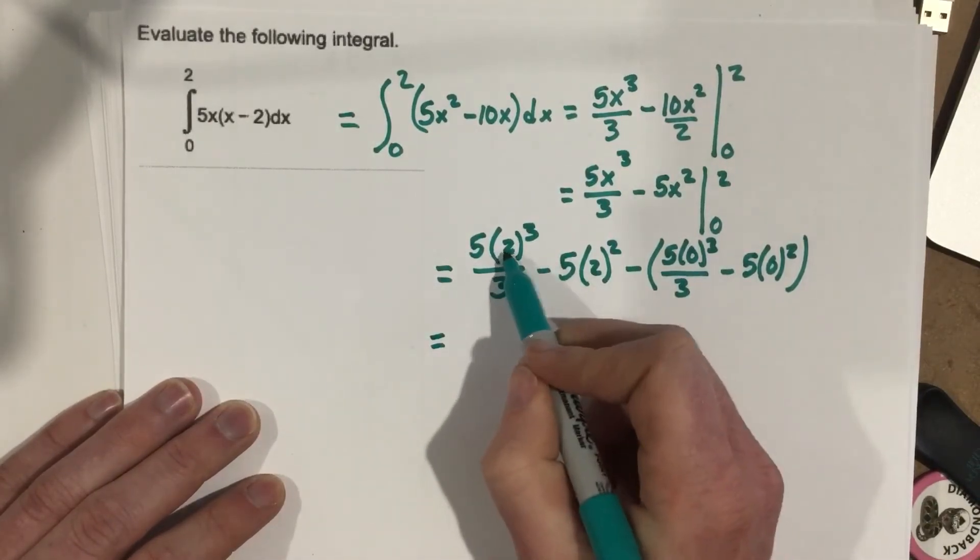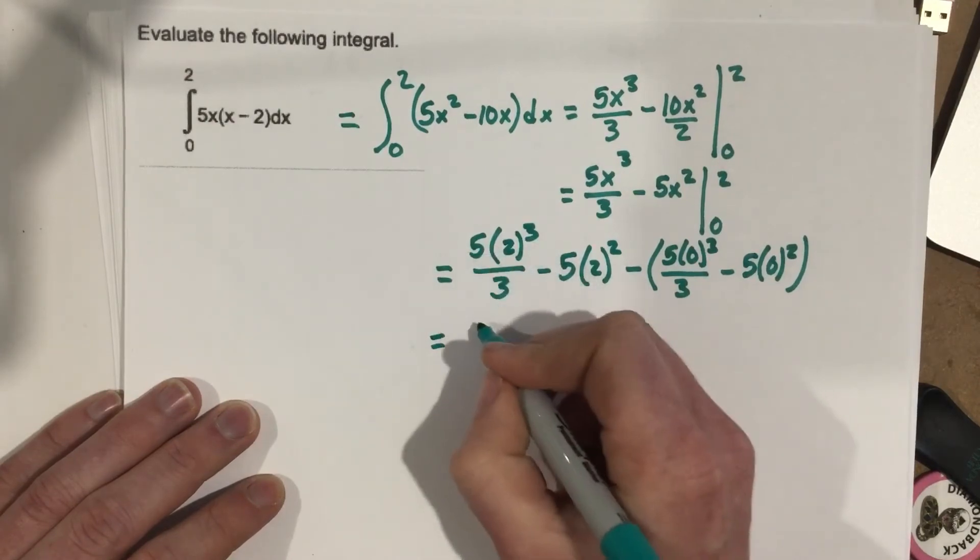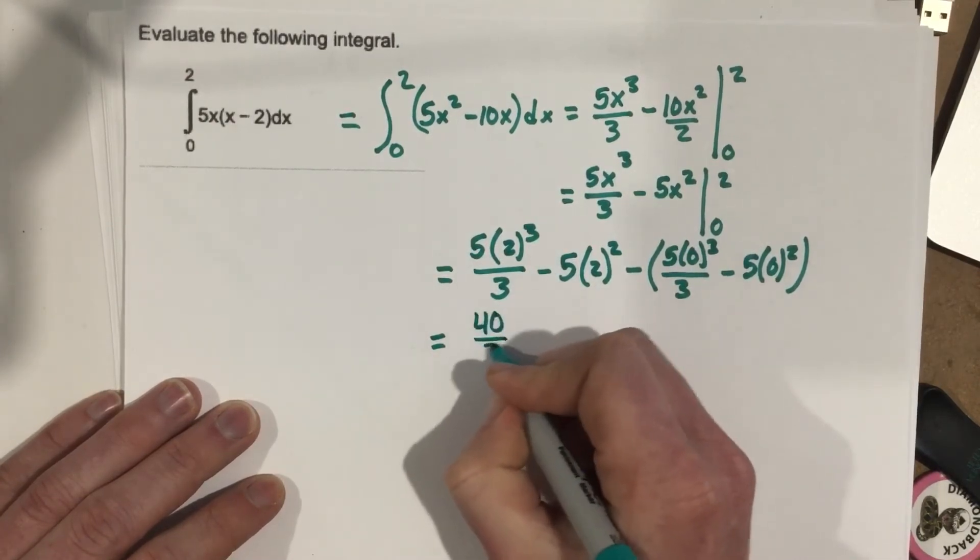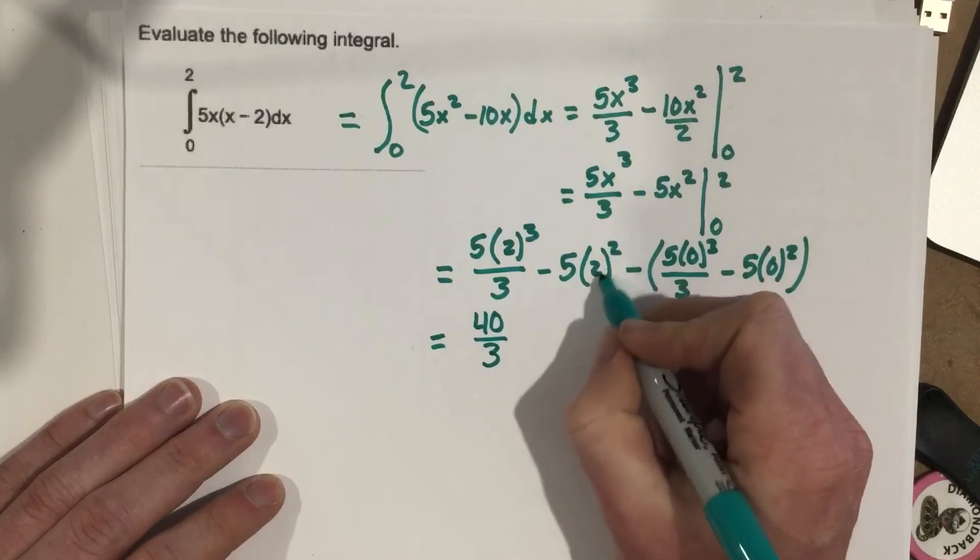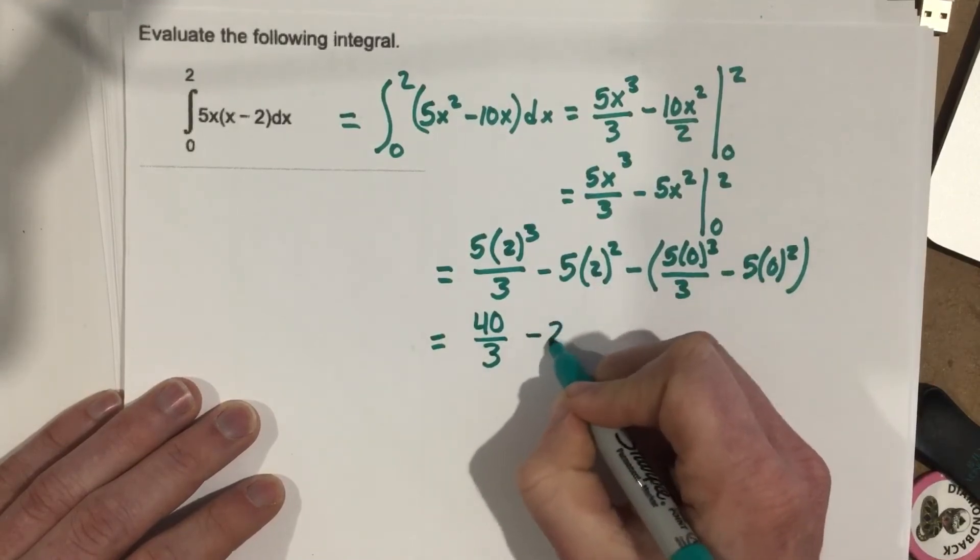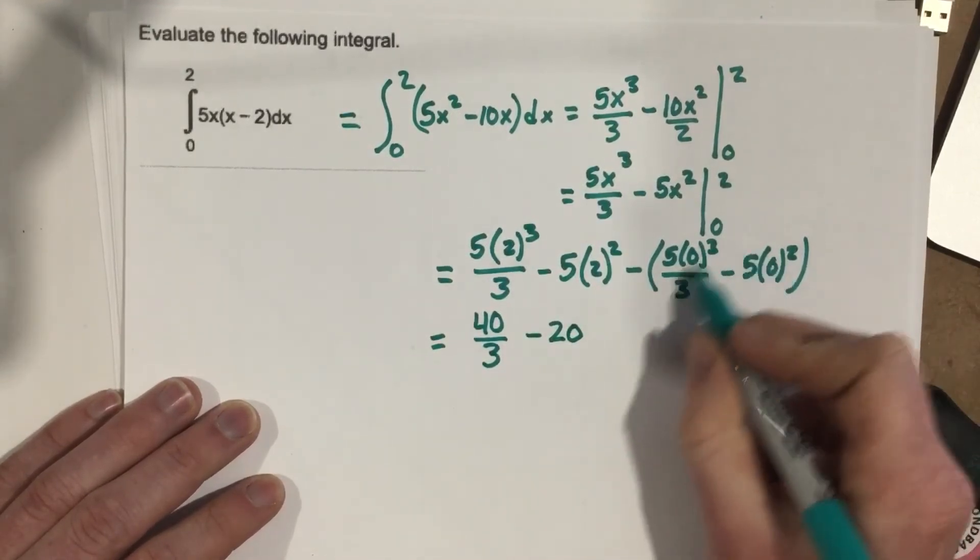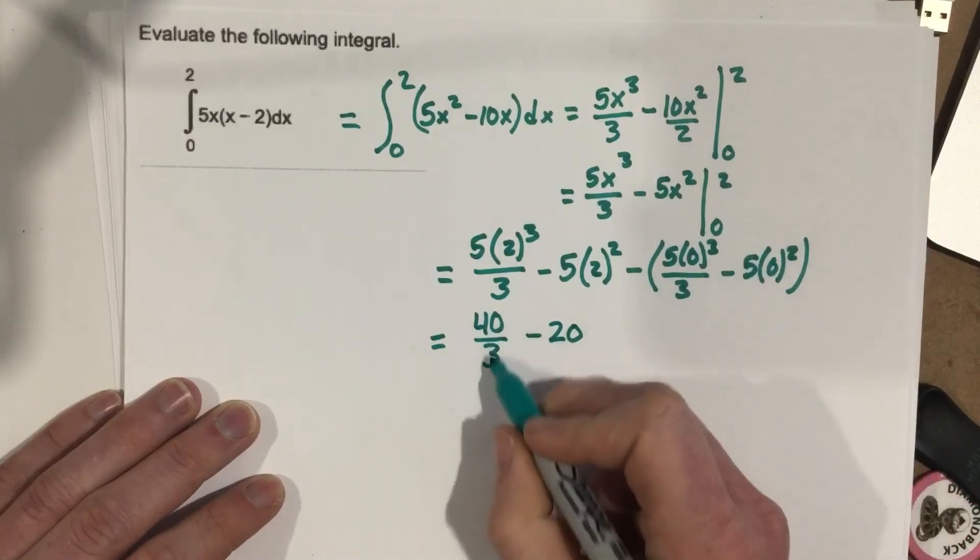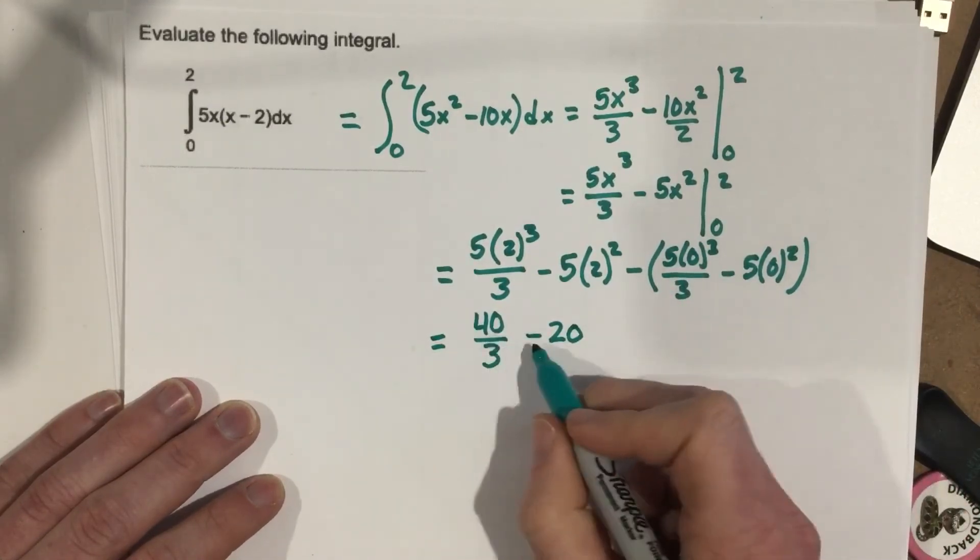We can start to evaluate these. 2 cubed is 8, 8 times 5 is 40 over 3. 2 squared is 4, times that is minus 20. This is just going to give you 0, so we end up with 40 over 3, minus 20, minus 0.